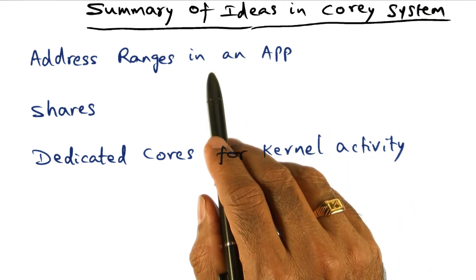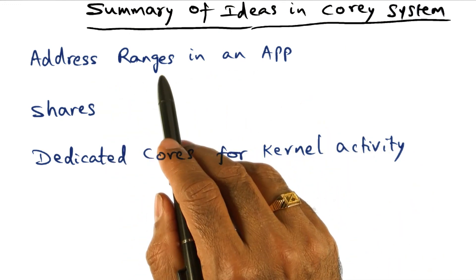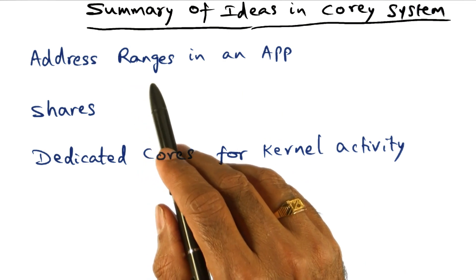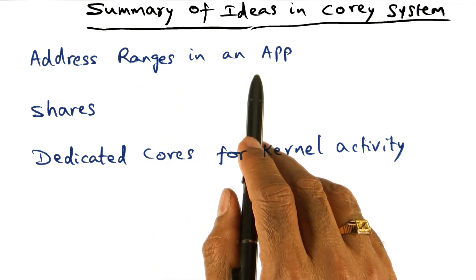One of the things in the Corey system is this idea of address ranges in an application. Basically, this is similar to the region concept in Tornado.